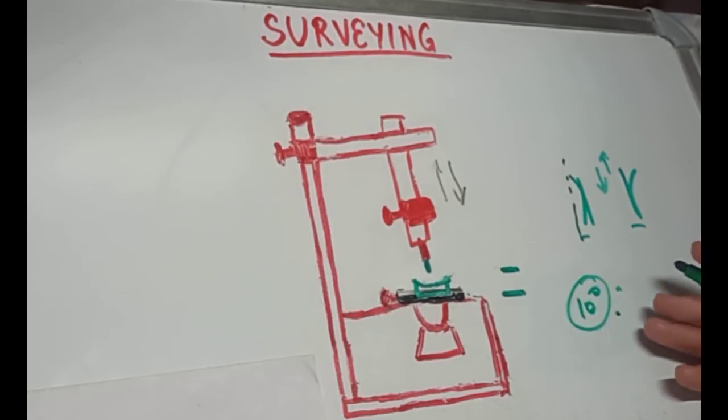Because if it exceeds 10 degrees, the designed RPD will require excessive mouth opening for the insertion. So, this is how we survey the cast and determine the path of insertion of the RPD.